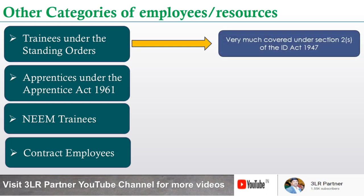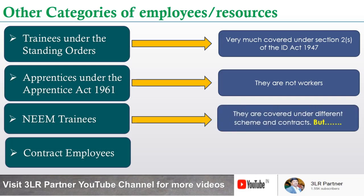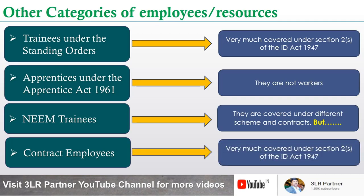Whether these categories are covered under section 2S of the ID Act 1947: trainees under the standing orders are covered under section 2S, though whether you can dispense their services is a separate legal issue. Apprentices under the Apprentices Act 1961 are governed under that statute and are not clearly workers - that is settled law. NEEM trainees are covered under different schemes and contracts, and whether they are workers depends on how you utilize them in practice. Contract employees are very much covered under section 2S of the ID Act 1947.